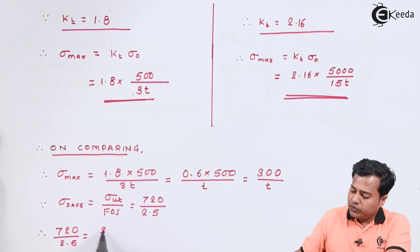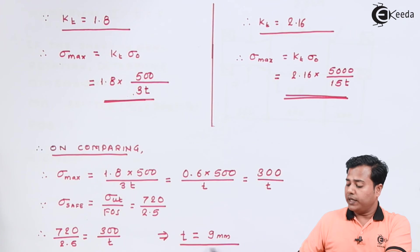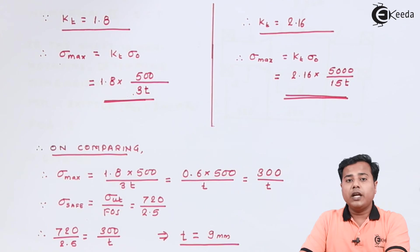After solving this relation we get thickness t is equal to 9 millimeter. So there we conclude that the thickness which is required to sustain these values is 9 millimeter.